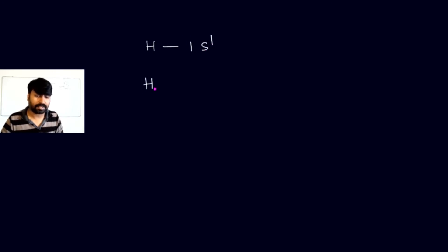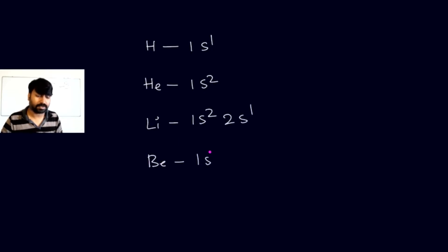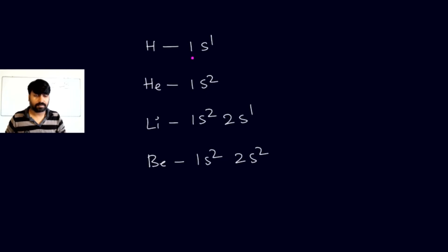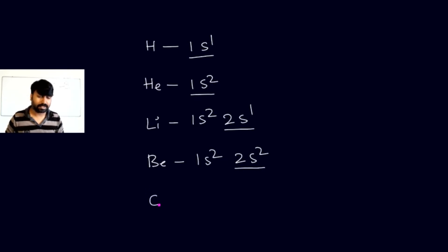For hydrogen, the electronic configuration is 1s¹. For helium, it is 1s². For lithium, it is 1s² 2s¹. For beryllium, it is 1s² 2s². In hydrogen, there is one electron in the last shell; in helium, two electrons; in lithium, one electron in the outermost shell (2s¹); and in beryllium, two electrons in the outermost shell.